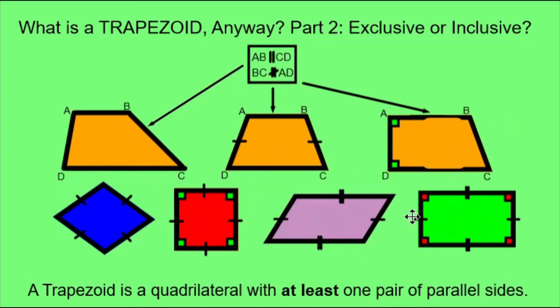By the exclusive definition, only the three orange trapezoids follow the rules, and therefore the rhombus, the square, the parallelogram, and the rectangle are not trapezoids. So it really depends on where you're learning this material. In areas where the curriculum uses the exclusive definition, like where I work, the orange ones are the only trapezoids that are following the rule.